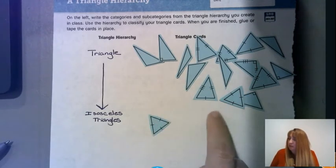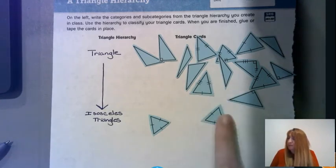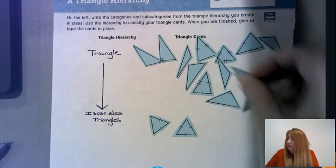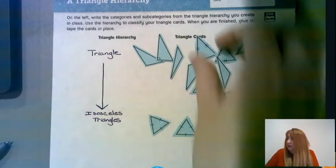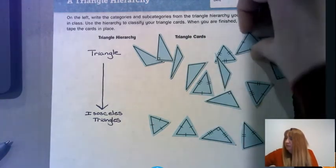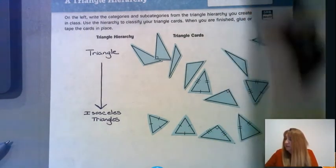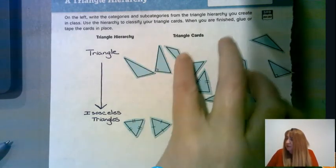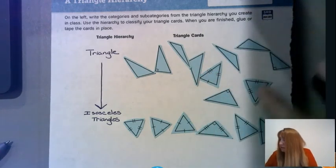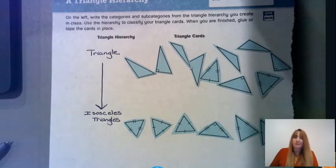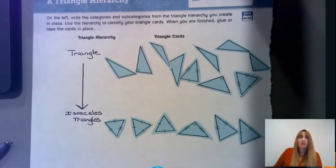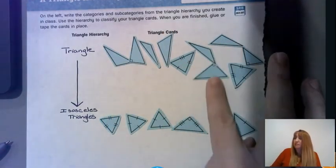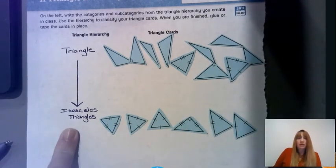So this one would work, this one — nope, this one — yes, this one — no, this one — no. These ones that don't qualify are stuck at the triangle level because they do not meet the property of being an isosceles triangle. Some of these isosceles triangles are actually equilateral triangles. So we're going to make another subcategory: equilateral triangles, E-Q-U-I-L-A-T-E-R-A-L. Only the ones that are equilateral can move from the isosceles level down to this new subcategory.